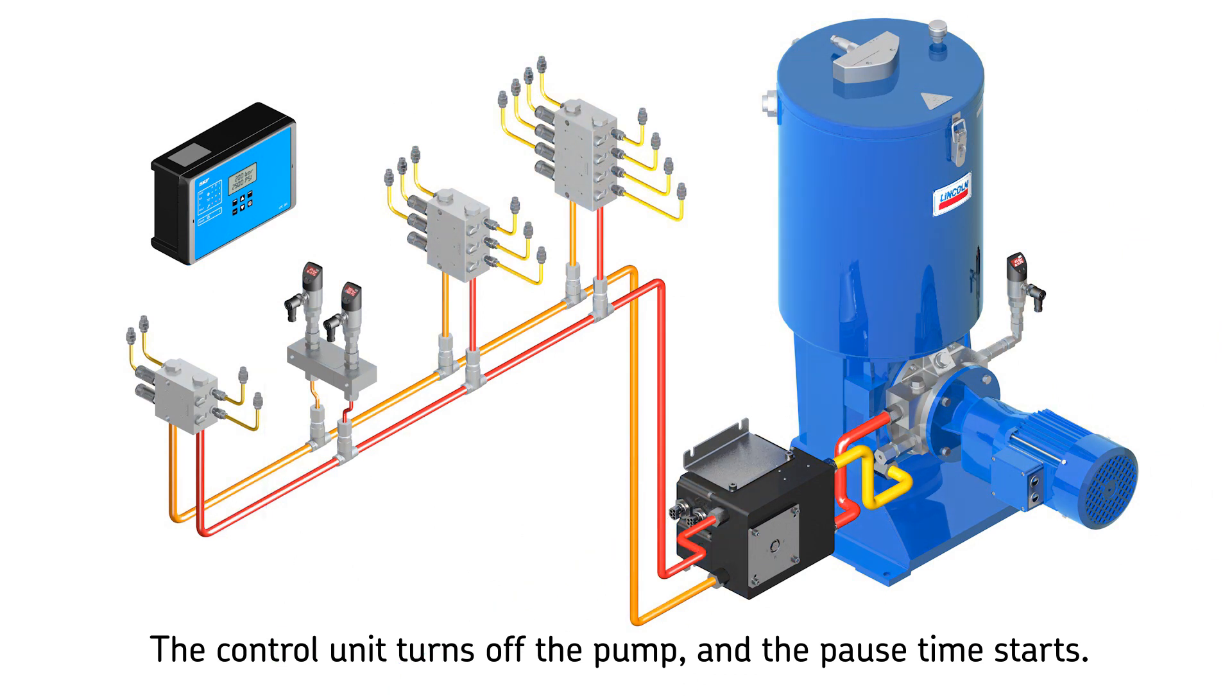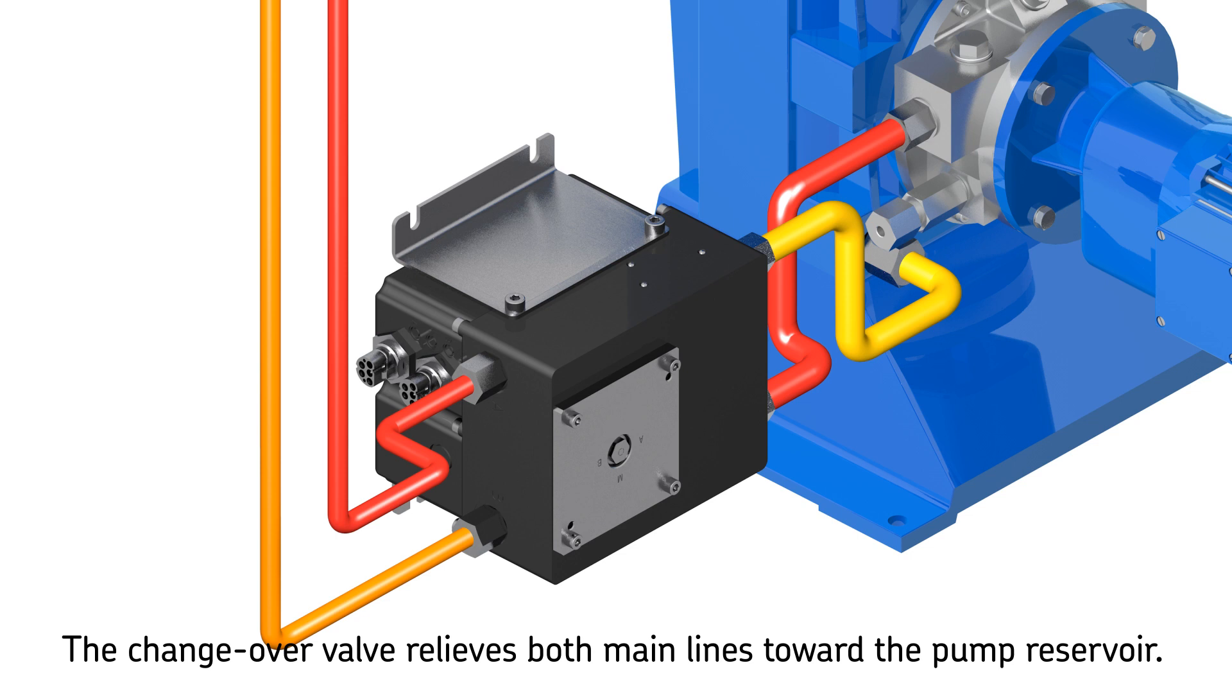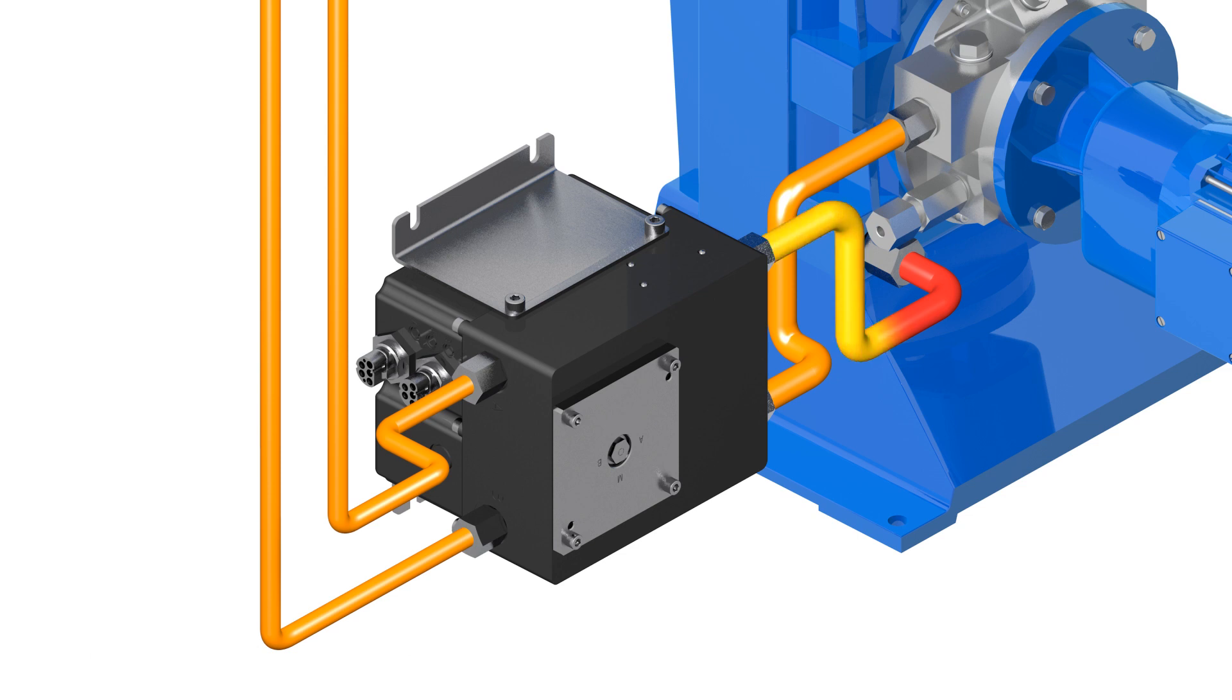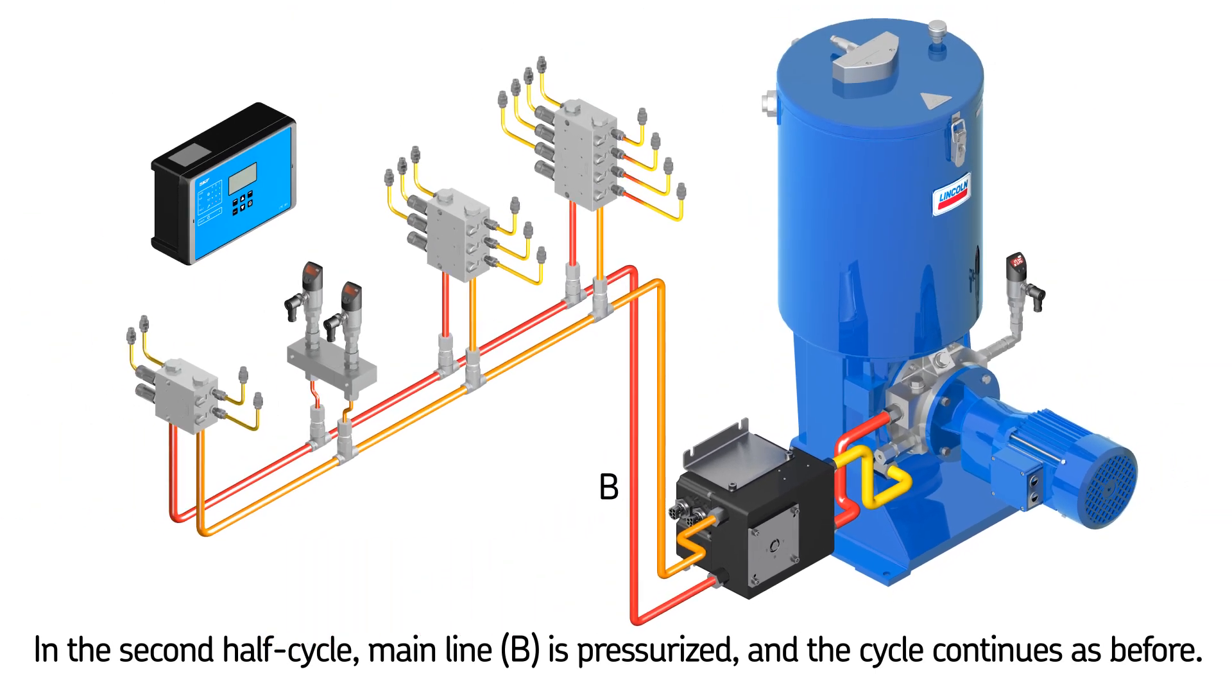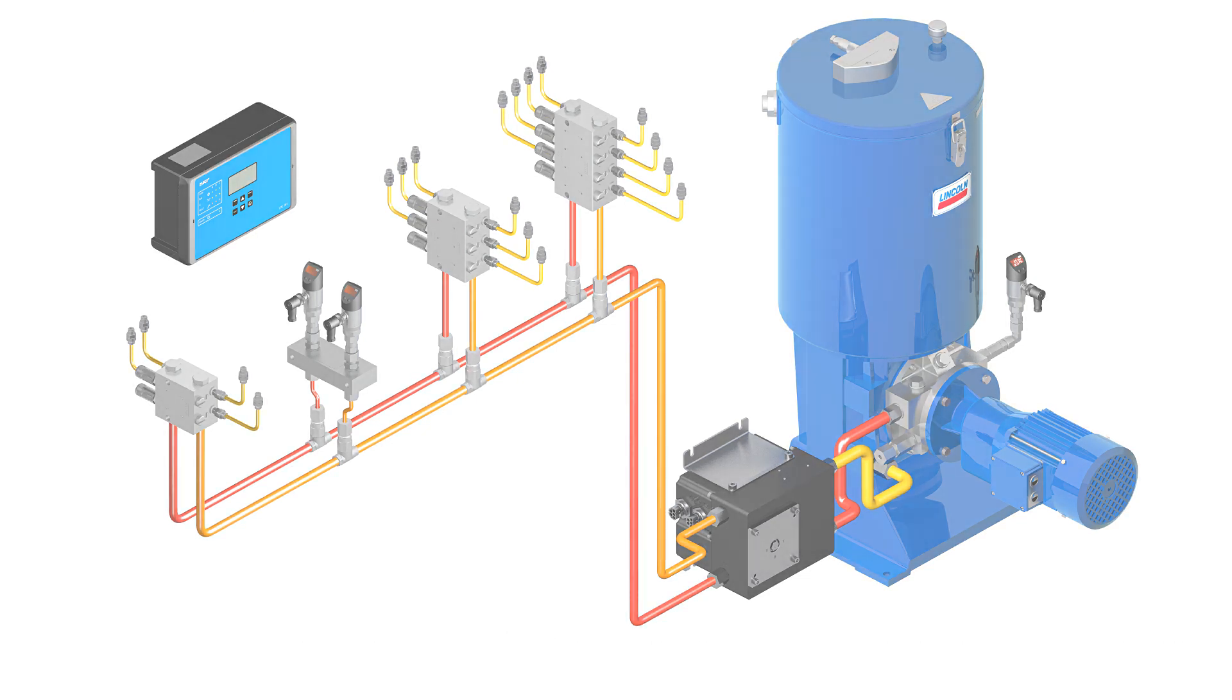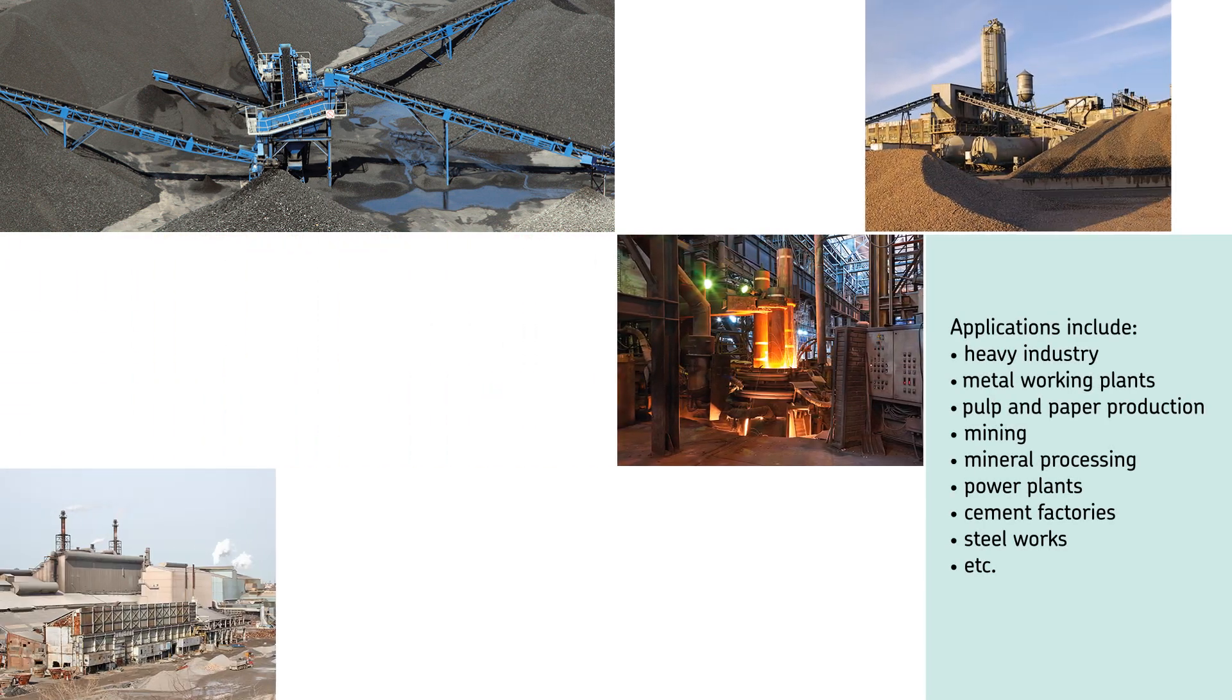At this stage, half of the lubrication points have been lubricated. System pressure relief works by first relieving the pressure line between pump and changeover valve into one main line, then both main lines are relieved simultaneously. In the second half-cycle, main line B is pressurized and the cycle continues as before.